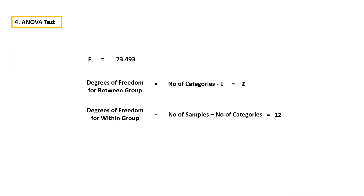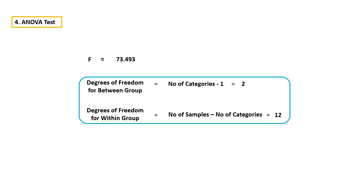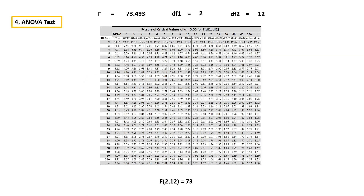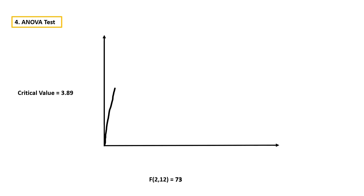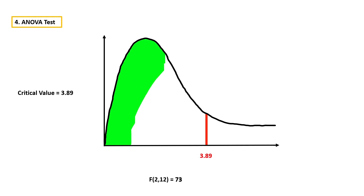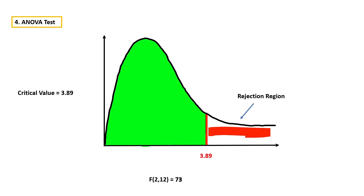The next step is we have to take three pieces of information: the F-score, the degrees of freedom for between group, and the degrees of freedom for within group. We need these degrees of freedom to get the critical value from the F table. We have to get the critical value for 2 and 12 degrees of freedom. In this case, the critical value is 3.89. After getting the critical value, we refer the F distribution. The critical value approximately falls here — everything left to this line is the acceptance region, and everything right to this line is the rejection region. The F-score will approximately come here.